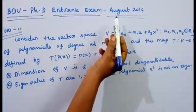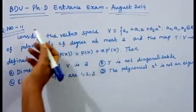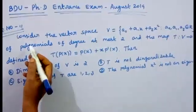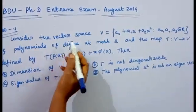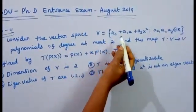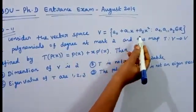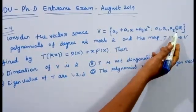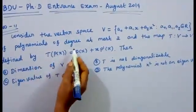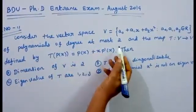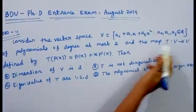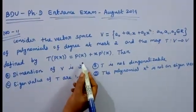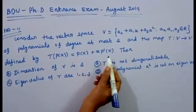August 2019, question number 11. Consider the vector space V equal to a0 plus a1 times x plus a2 times x squared, where a0, a1, a2 belong to R — polynomials of degree at most 2. The map T from V to V is defined by T(p(x)) equals p(x) plus x times p'(x).